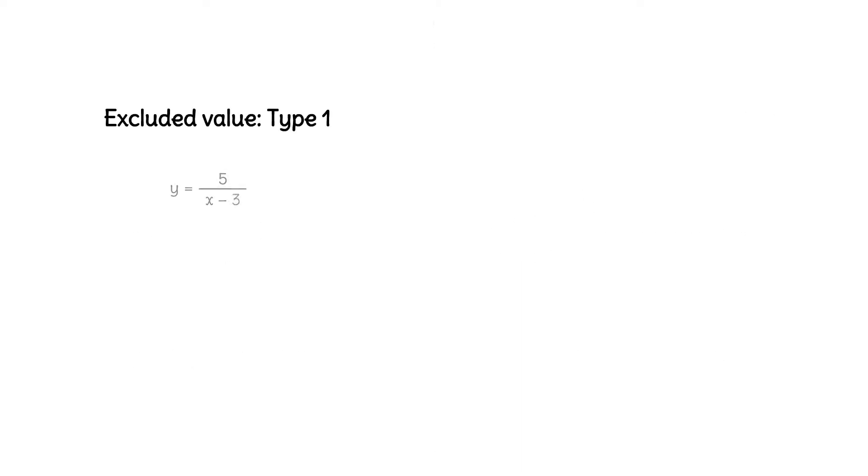Let's start with a simpler rational function, y equals 5 over x minus 3. There is an excluded value here. What is it?